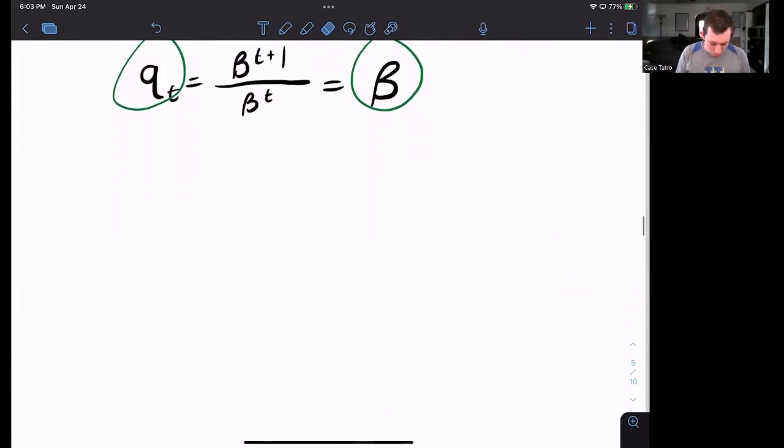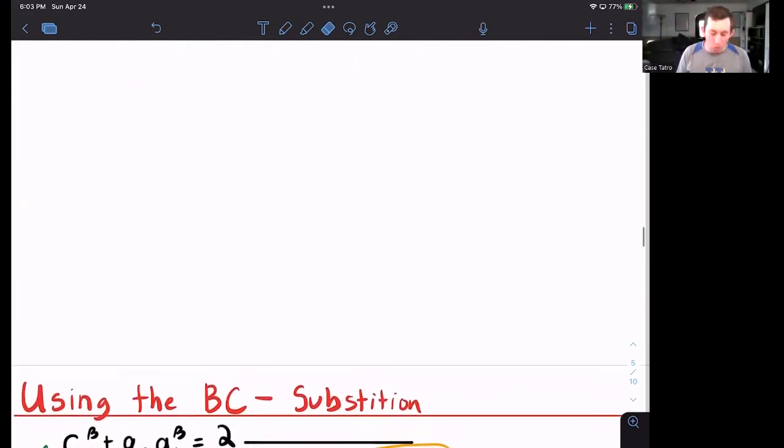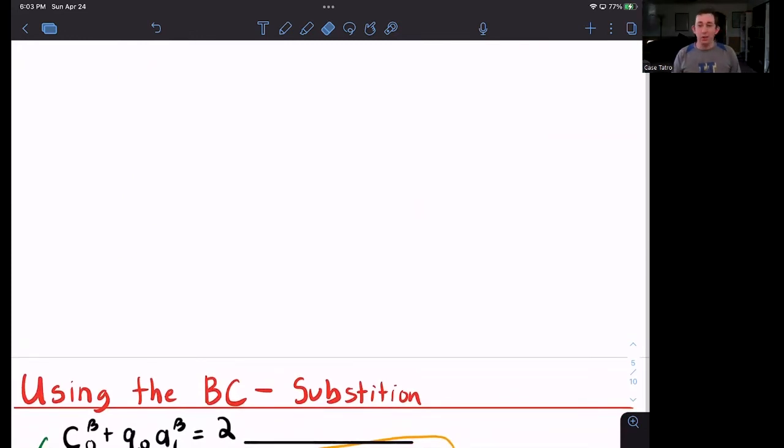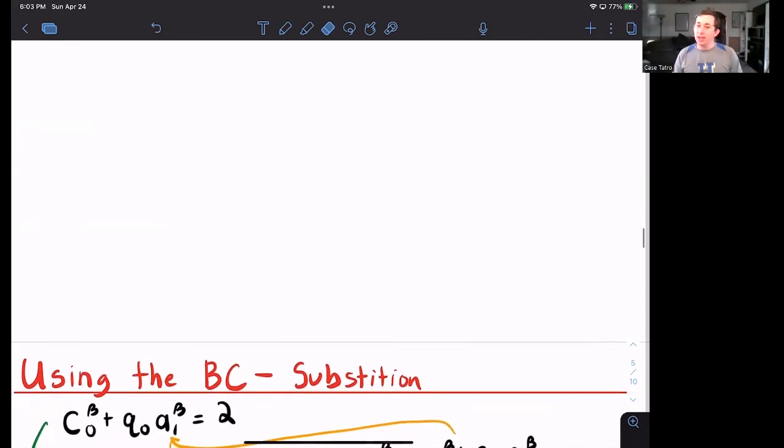And that gave us to the point that the prices are just equal to beta. Now we are going to use the budget constraints in order to solve for the final allocations. Now remember that we don't have just one budget constraint. We have T budget constraints. Everyone has a budget constraint in each period. So let's just start with the first one and let's just keep substituting into that budget constraint and let's see what we get.